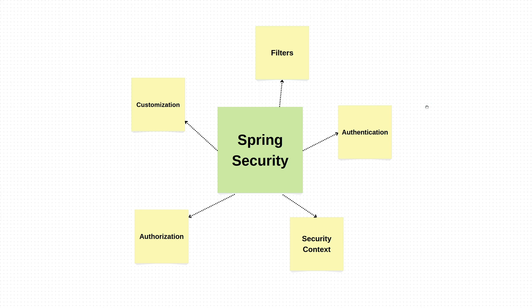At this point, we already know the difference between authentication and authorization, and what JWT tokens are. As the last thing, let's learn a bit more about Spring Security. Spring Security is like the security team of a building. It manages authentication and authorization for our app with filters, authentication, security context, authorization, and additional customization.